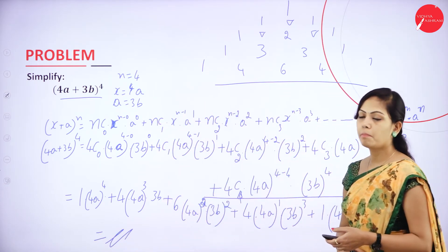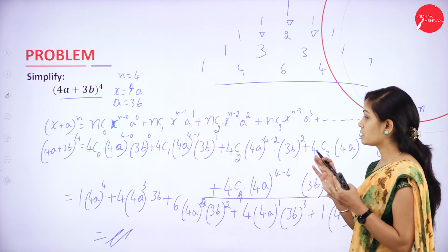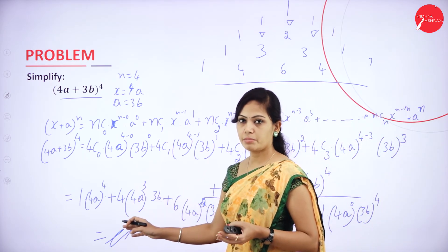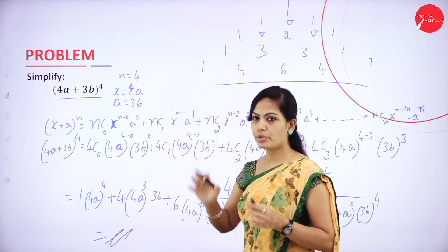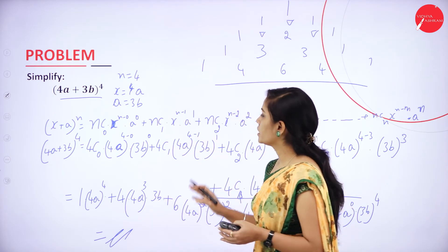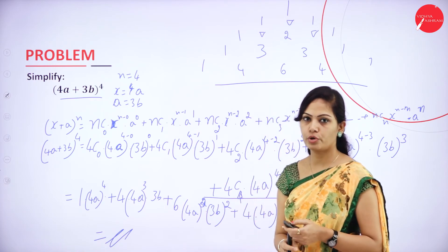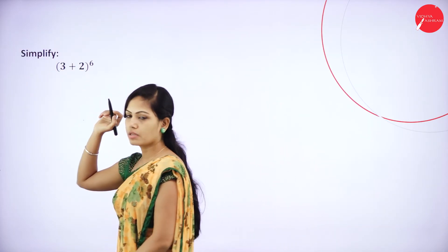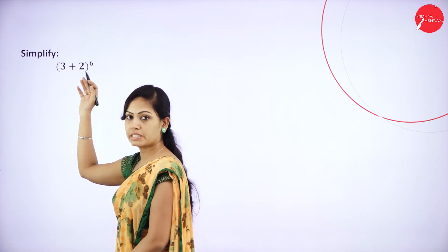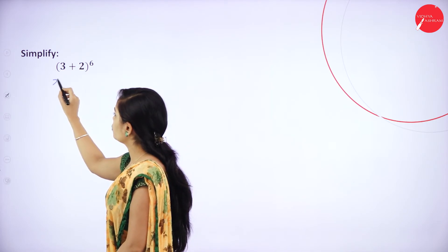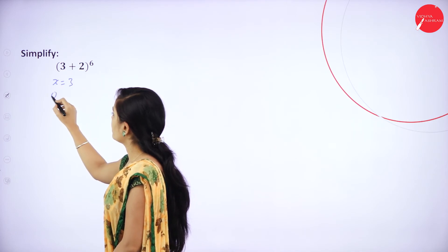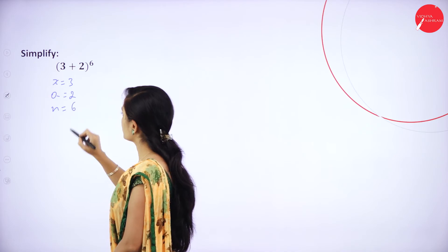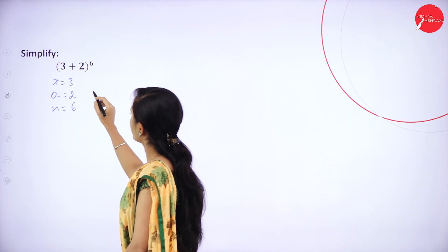So this is called binomial expansion. It is a 7 marks question. Please practice the questions properly — every step you have to explain in exams. This is about your binomial coefficient. The next problem: x plus a power n, where x value is equal to 3, a value is 2, and n value is 6. Now I will expand this expression.